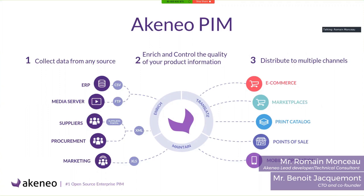Akeneo PIM product enrichment is split in three main steps. The first one is collecting the data — from ERP, from media server, or from supplier files. Then we enrich and control the quality of the product information; for example, we can translate in different languages. And then we spread the products that are complete to multiple channels: could be e-commerce website, marketplace, point of sale, etc.